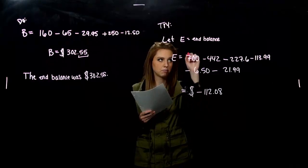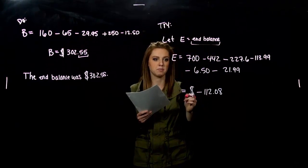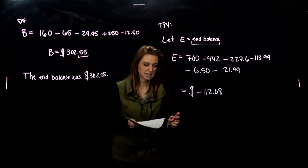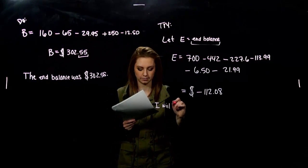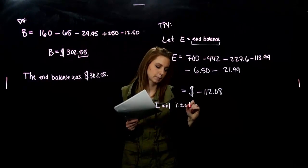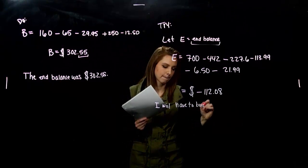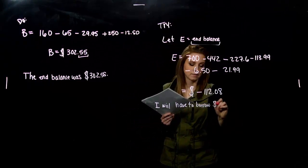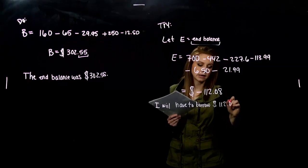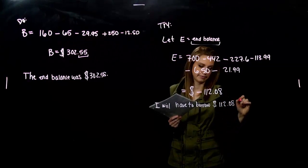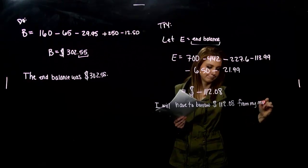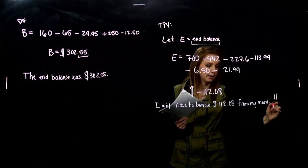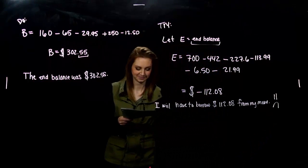And again, what units are we talking about? It's a balance. So money at the end. So what's going to have to happen? I will have to borrow $112.08 from my mom. No one likes to borrow money. Nope. Okay.